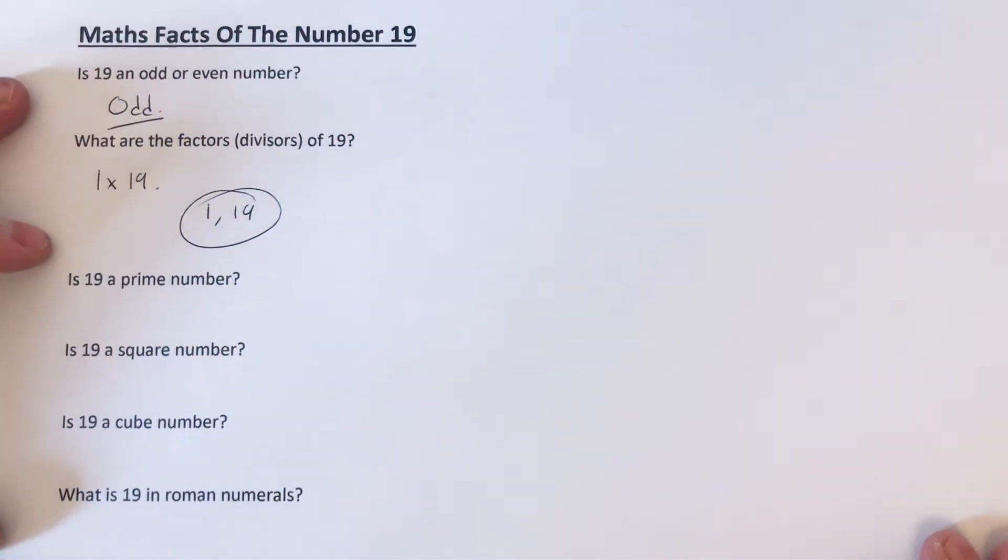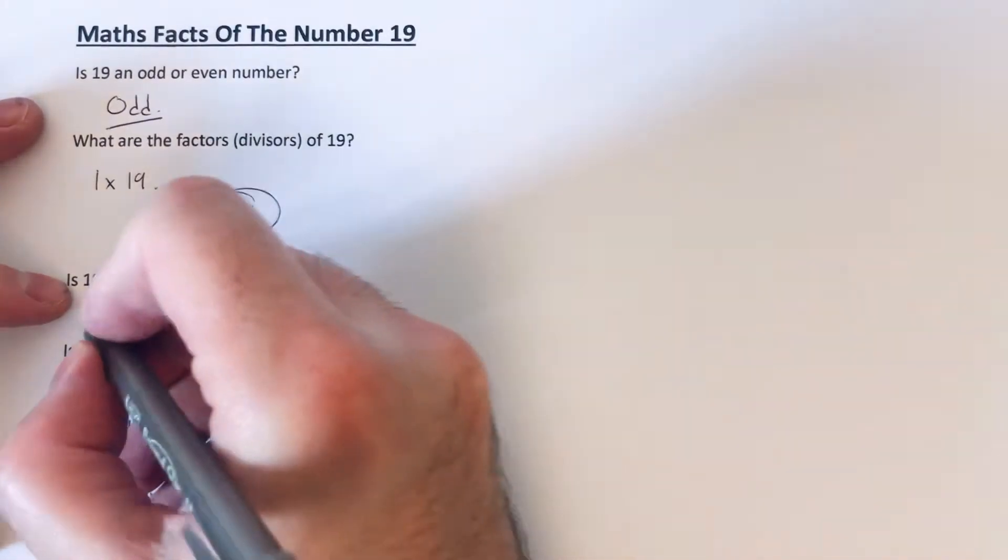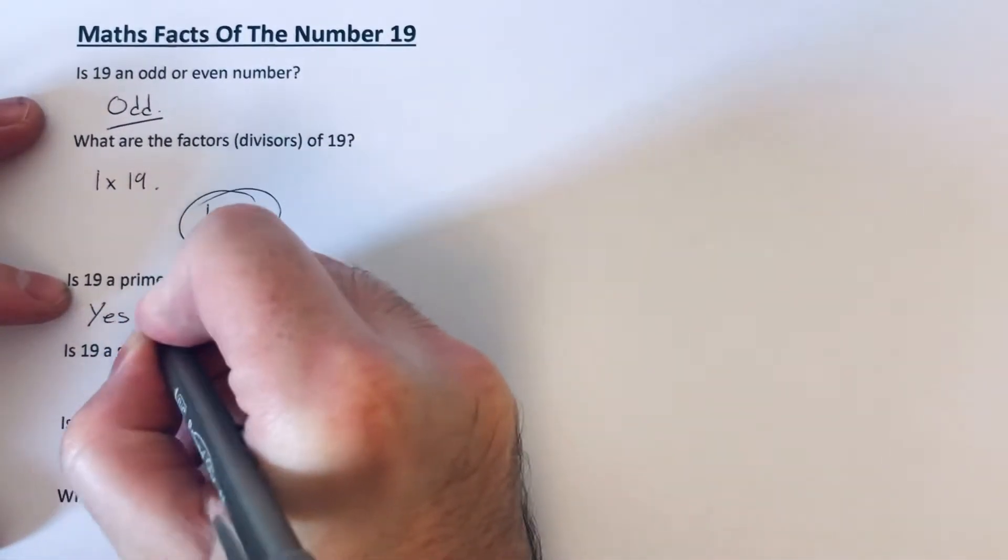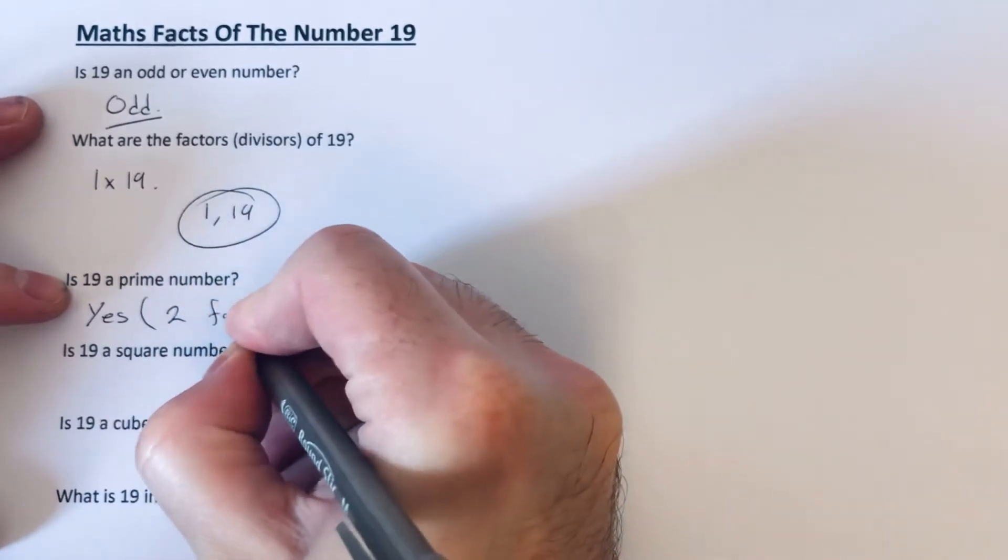So is 19 a prime number? Well, the answer to that is yes, because there is exactly two factors.